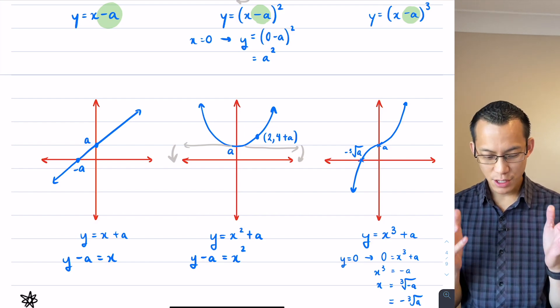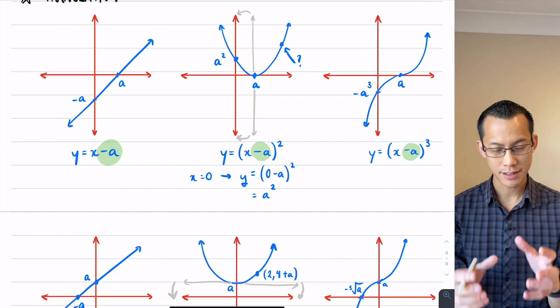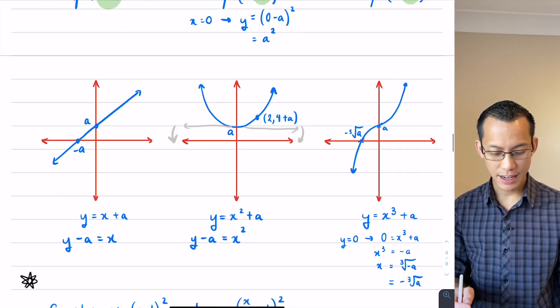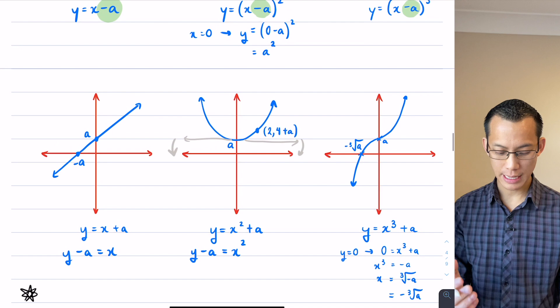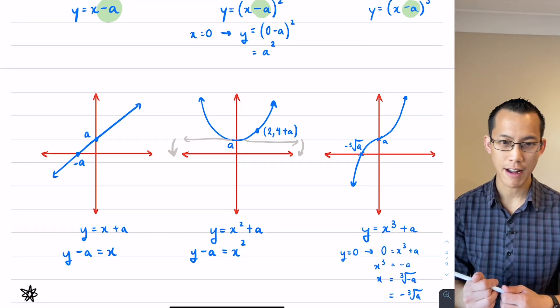So this is translation. Let me remind you that what we're thinking about is left-right change if your translation is on the x, and you've got an up-down change if your translation is on the y. So look carefully at where the algebra is, and that will tell you which direction the graph moves in.